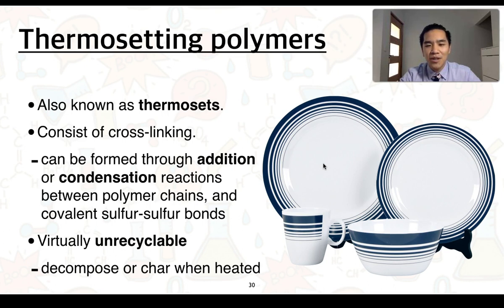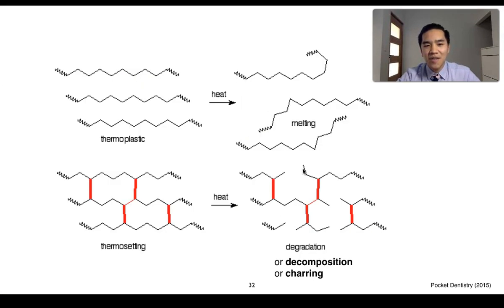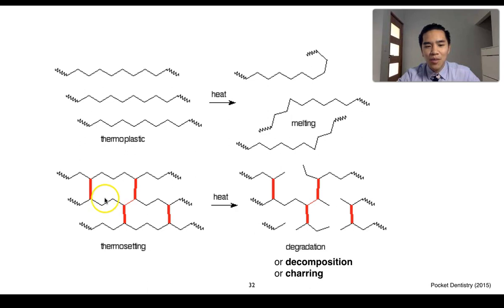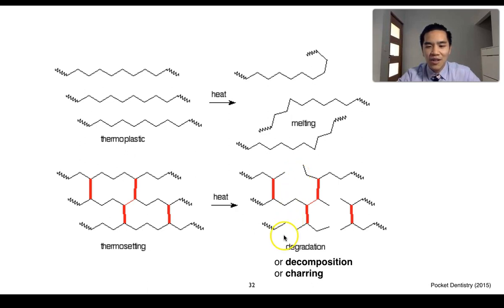An example of a thermosetting polymer is melamine, which we can see here, and it's typically used to produce unbreakable dinnerware. In this image we can see the effect of heat on both thermoplastics and thermosetting polymers. With thermoplastics, you apply heat and can separate the polymer chains, effectively melting it so it can be remoulded and reshaped. Thermosetting polymers, because of their cross-links, require significant heat, but when applied it causes breaking of various covalent bonds — including the cross-links and the bonds within the polymer chains — causing degradation, decomposition, or charring of the polymer.